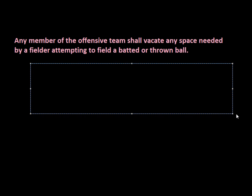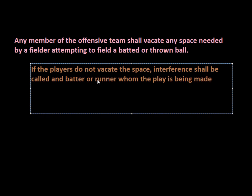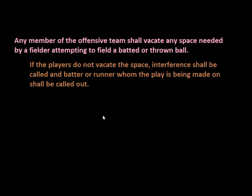If players don't vacate the space — and this includes not only players but coaches and trainers who are in the area — then interference shall be called, and the batter or runner who the play is being made on shall be called out. So if you don't allow the defense to make the play, your teammate will be called out.